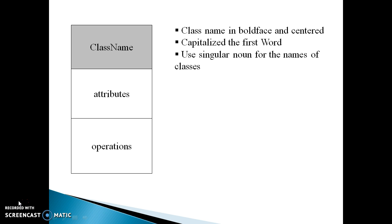The first compartment is the class name, in which we can specify the name of the class. The second compartment is the attribute declaration. And the third compartment is the operation declaration compartment.